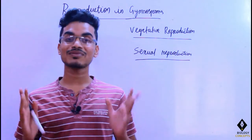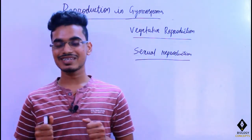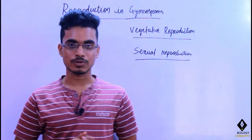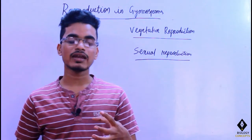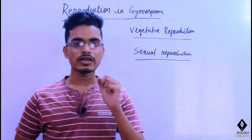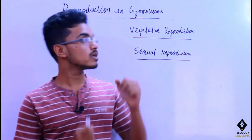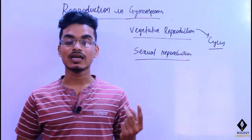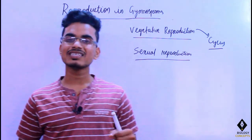Good morning everybody, my name is Fargo and you're watching Biology Concepts. Today we're going to discuss reproduction in gymnosperms. Firstly, we're going to understand how many types of reproduction there are. There are actually two types of reproduction present in gymnosperms: one is vegetative reproduction and the second is sexual reproduction.